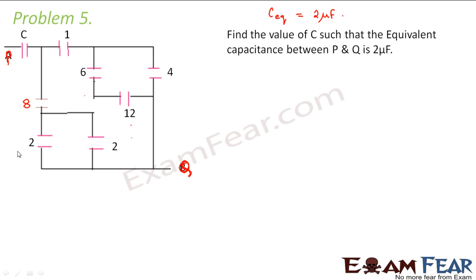So the first thing that we will do is we will draw this circuit as per our convenience. Always remember that is the best thing to do whenever you have to find the equivalent capacitance of a complicated circuit. So let us start with point P.